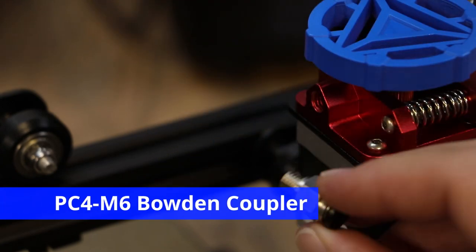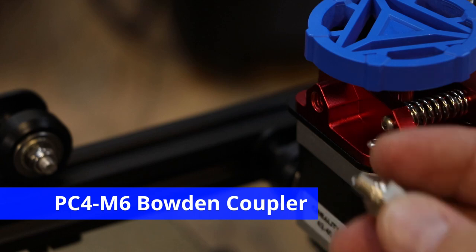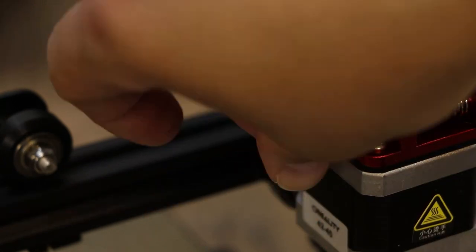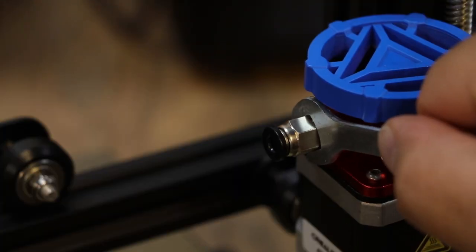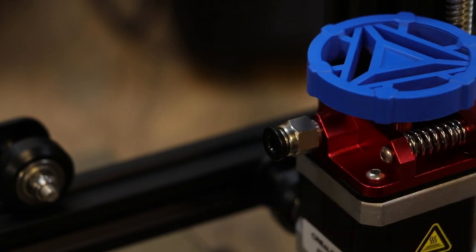Then you want to grab the Bowden coupler with the smaller threads here and screw that right into the extruder. Grab your wrench and tighten it about a half a turn past hand tight so it's nice and tight in there.